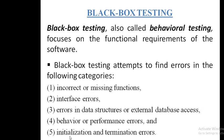The fifth category is initialization and termination errors. Initialization errors refer to giving input to the program and any assumptions provided to it. Termination errors relate to output generation and report generation. So initialization and termination errors can be found using black box testing. These are the five different types of errors we can find with black box testing.